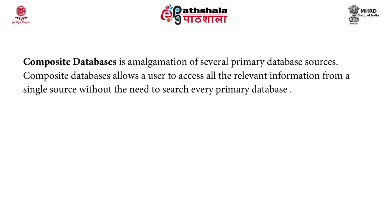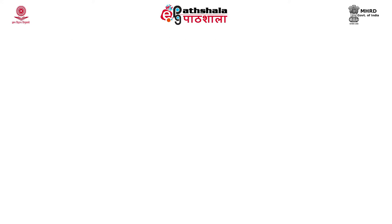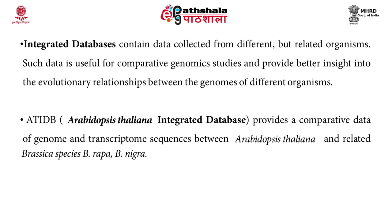A composite database is an amalgamation of several primary database sources, allowing users to access all relevant information from a single source without the need to search every primary database. A popular example is NCBI, which includes several primary and secondary databases such as GenBank, PubMed, and OMIM. An integrated database contains data collected from different but related organisms; such data is useful for comparative genomic studies, providing better insight into evolutionary relationships between genomes. An example includes the Arabidopsis thaliana integrated database.